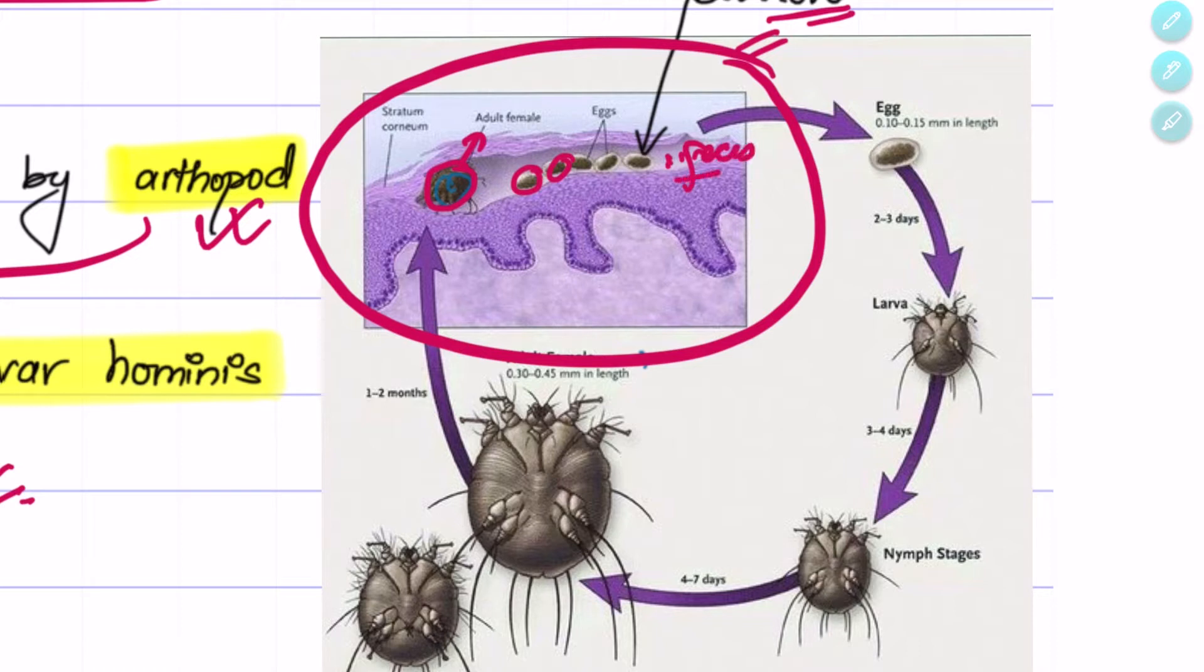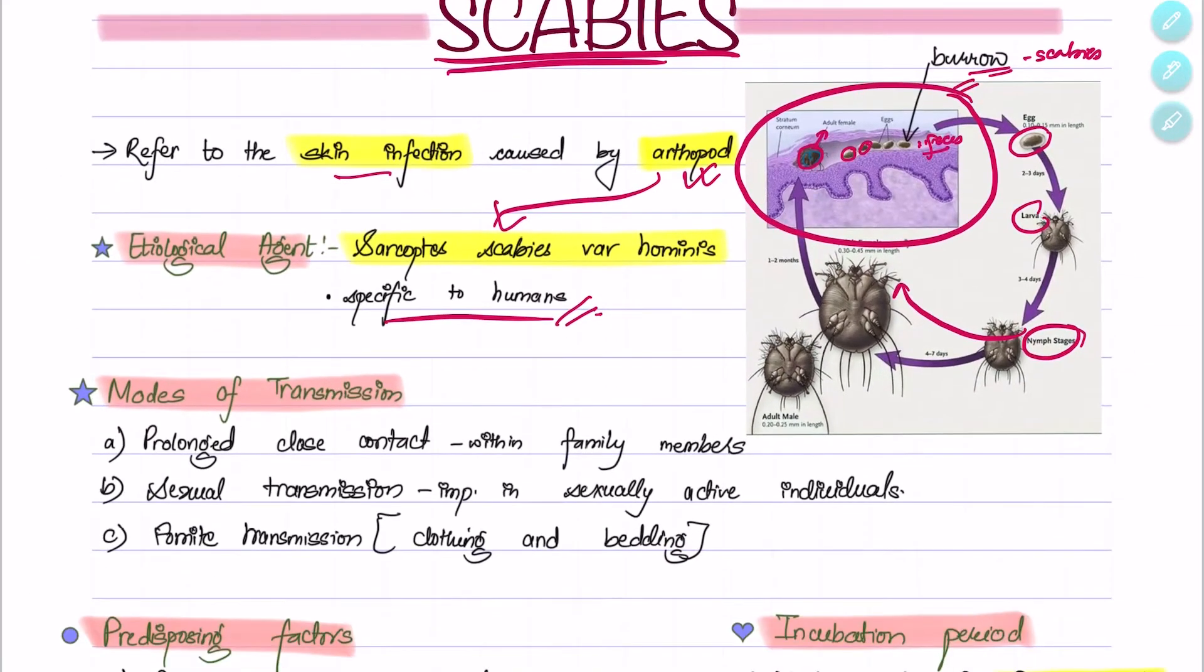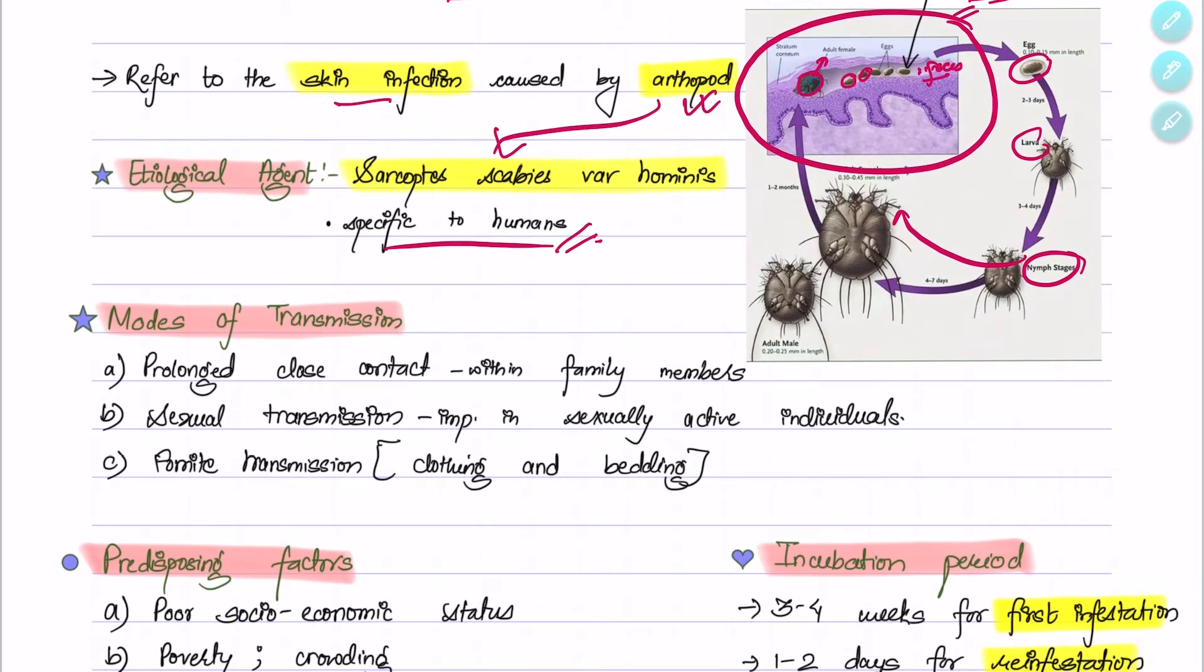These eggs turn into larva, nymph stage, and finally into an adult. Now talking about the mode of transmission, there are three main modes of transmission: prolonged close contact which is seen within family members.